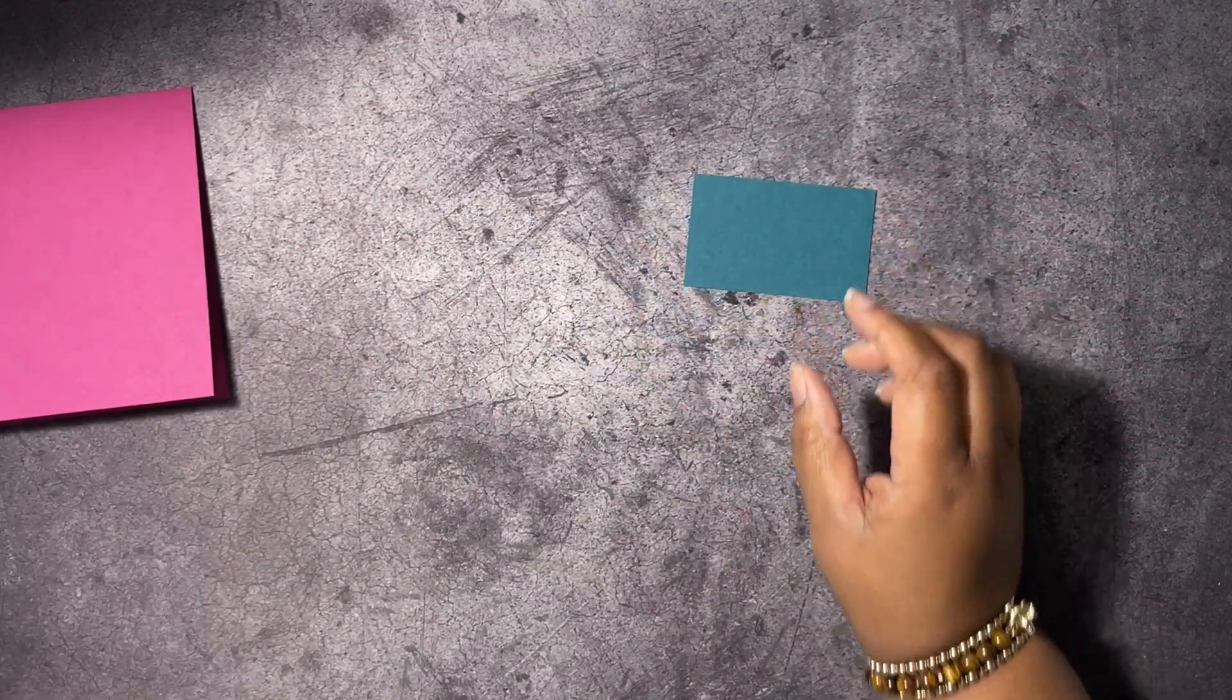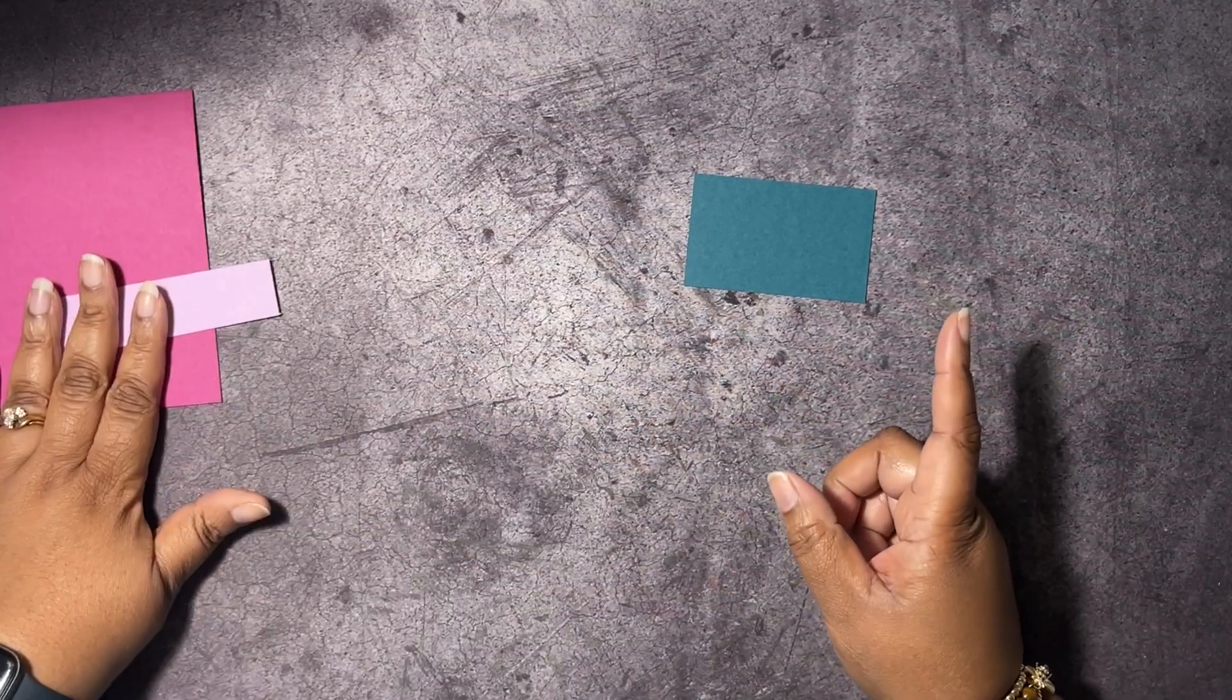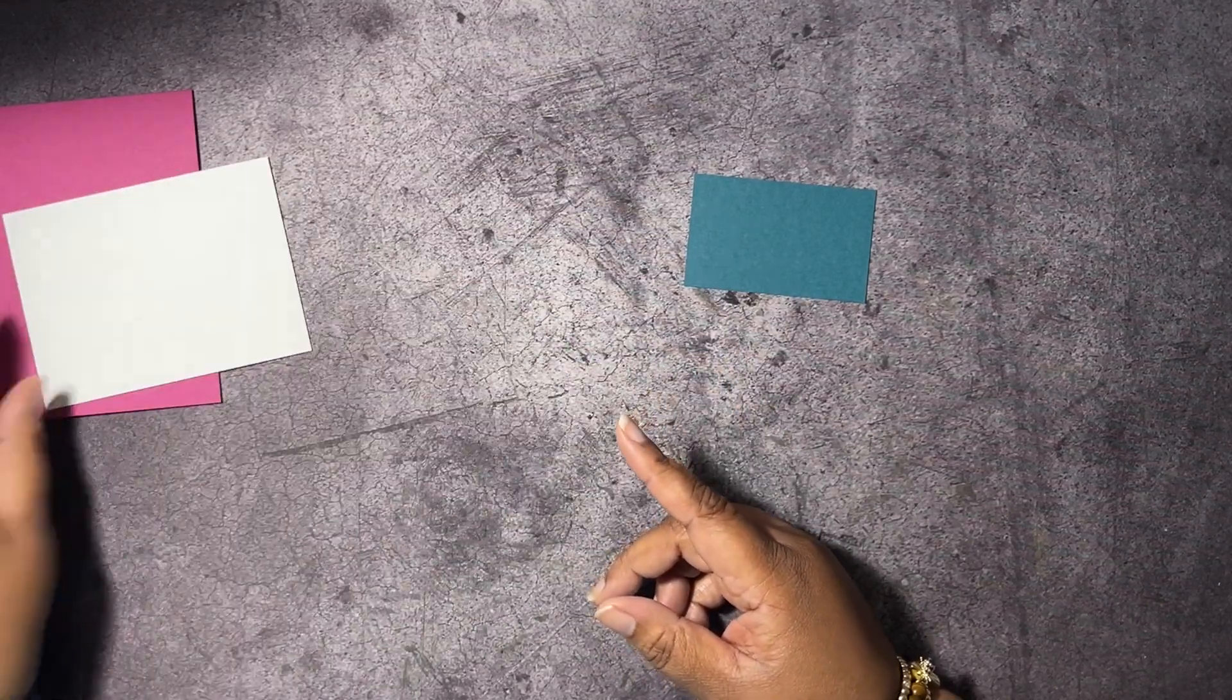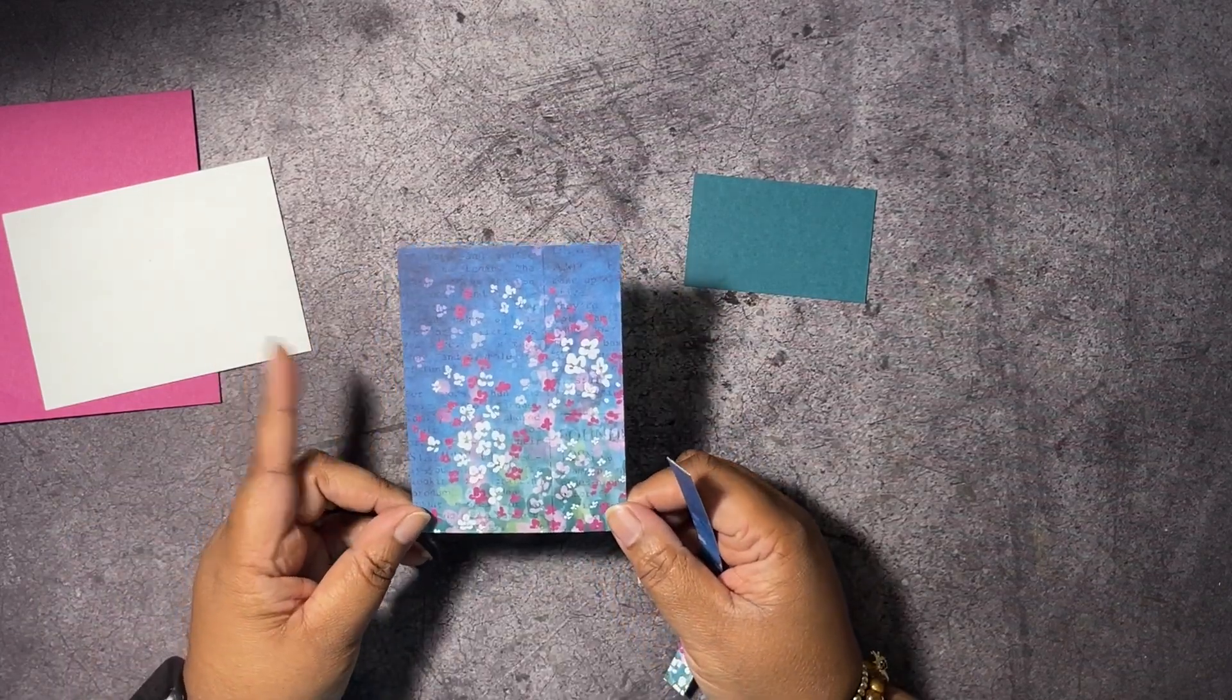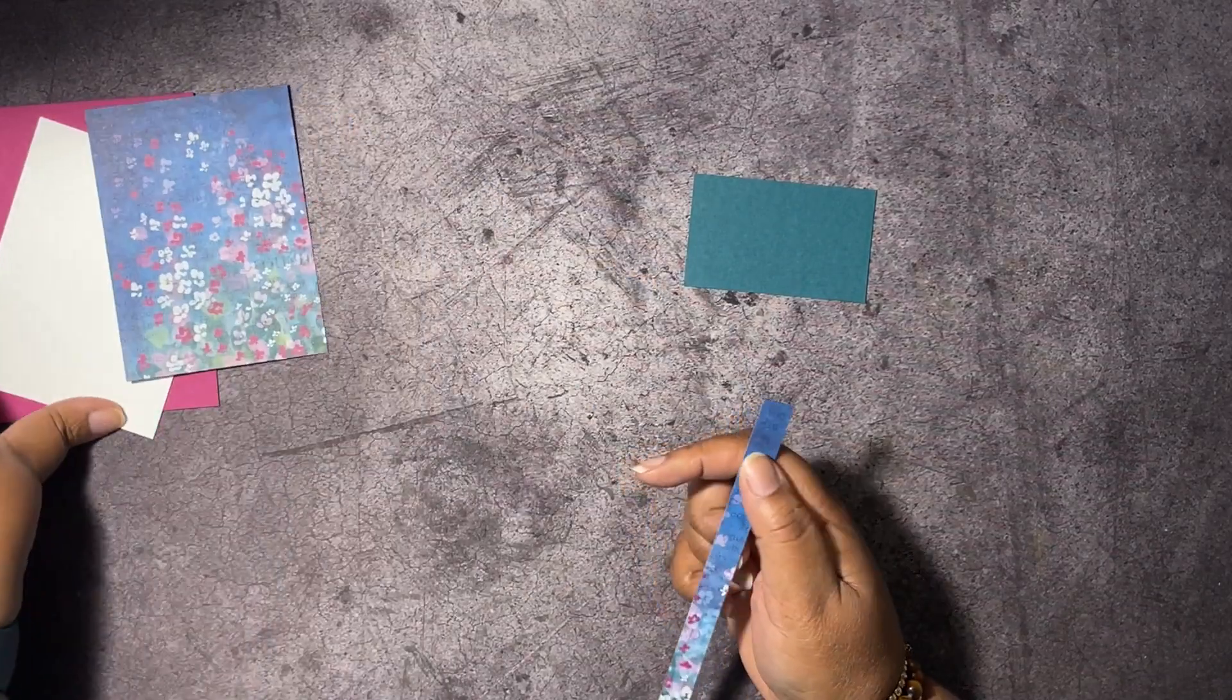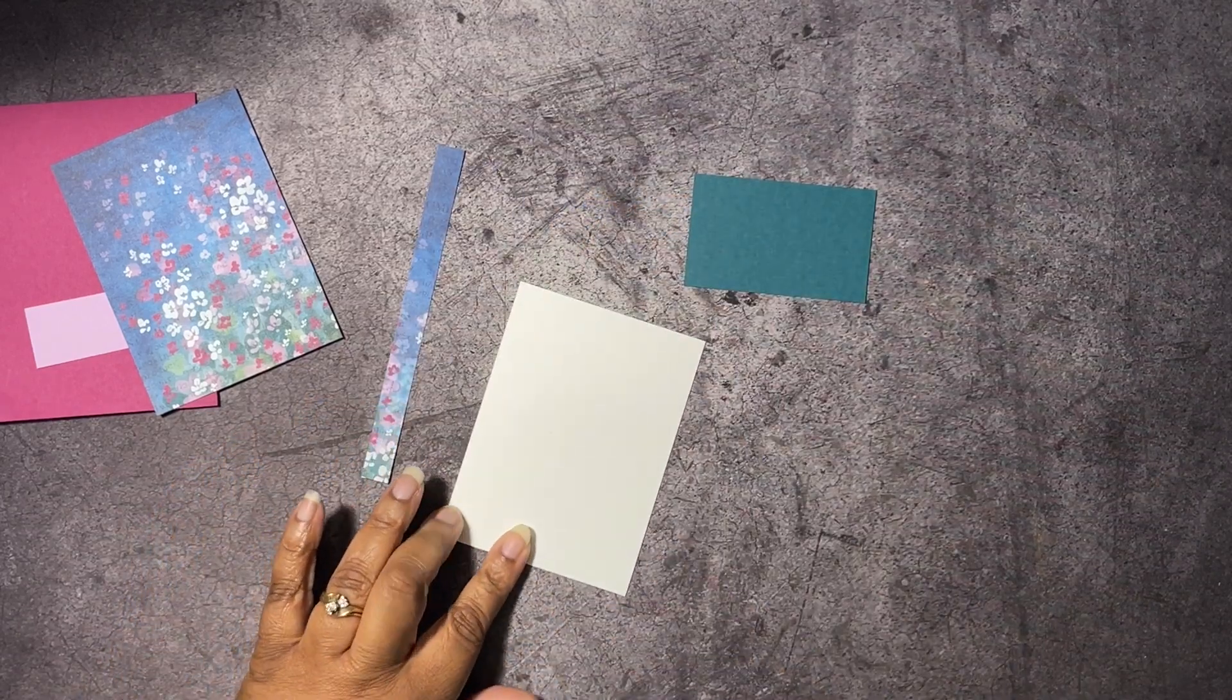That is all of our buzzworthy business for the day, so let's get started on our project. What we have here is a card base of Berry Burst at 4 1/4 by 11 scored at 5 1/2. We have some Pretty Peacock which is just scrap. We have some Fresh Freesia, this is 1 by 4 1/4. We have some Basic White for our inside, this is 3 1/2 by 4 3/4, and then we have our designer series paper at 3 1/2 by 4 3/4. This strip is a half inch and we're going to cut it down to 4 3/4.